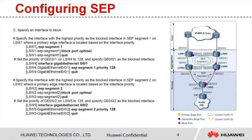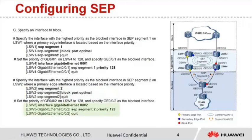Step C, specify an interface to block. Specify the interface with the highest priority as the blocked interface in SEP segment 1 on LSW1 where a primary edge interface is located, based on the interface priority. Set the priority of GE001 on LSW4 to 128 and specify GE001 as the blocked interface. Specify the interface with the highest priority as the blocked interface in SEP segment 2 on LSW2 where a primary edge interface is located. Set the priority of GE002 on LSW5 to 128 and specify GE002 as the blocked interface.